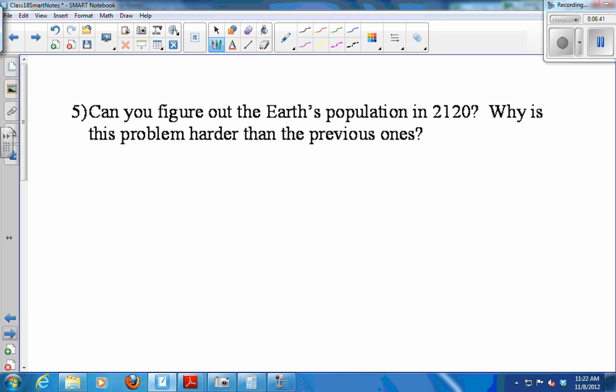After trillion, so this would be trillion, so it would be quadrillion. 6,291,456,000,000. This is greater than 6 quadrillion people. So we see the power of exponential growth is that it's really fast. Numbers can get big really fast when you're constantly multiplying by the same amount. So what about the Earth's population in 2120? It is harder. Why is it harder than the previous ones?